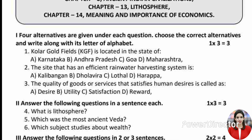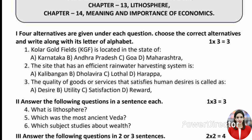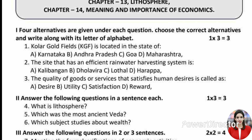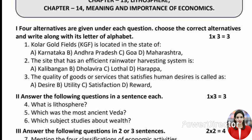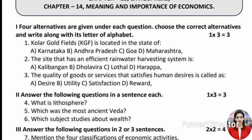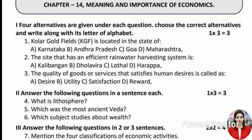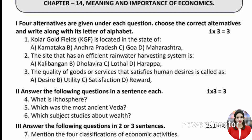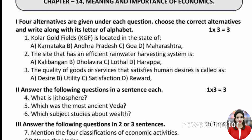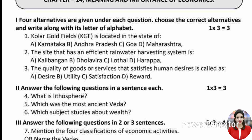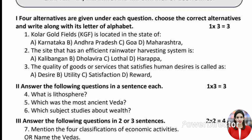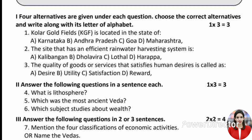Question 2: The site that has an efficient rainwater harvesting system is — A. Kali Bangan, B. Dholavira, C. Lothal, D. Harappa.